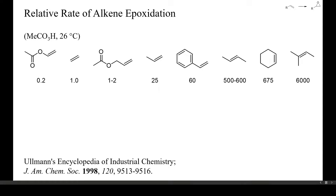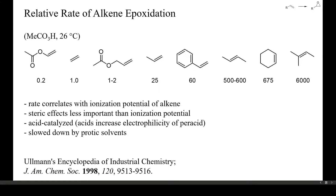Unlike catalytic hydrogenations, the rate of epoxidation with peroxy acids depends mainly on the ionization potential of an alkene, and not on steric accessibility. Additional alkyl substituents strongly enhance the epoxidation rate, as shown here for epoxidations with peracetic acid. Such epoxidations are usually acid-catalyzed, because acids enhance the electrophilicity of the peroxy acid. Protic solvents, on the other hand, mostly slow such reactions down, and epoxidations with peroxy acids are therefore often conducted in chloroform or dichloromethane.